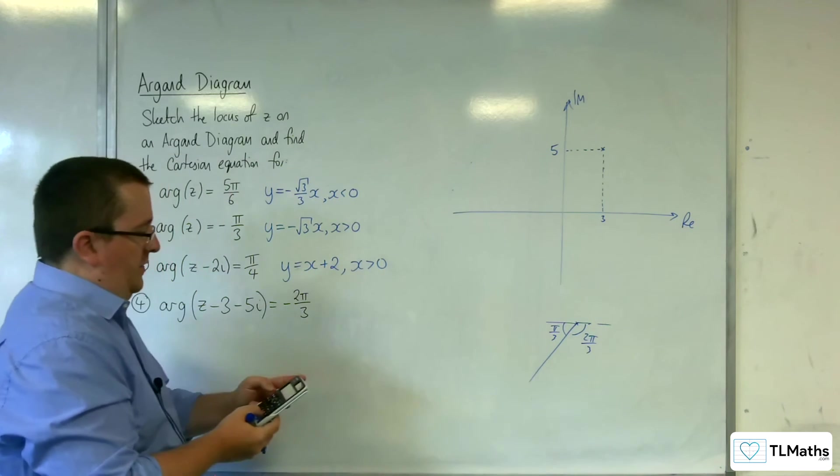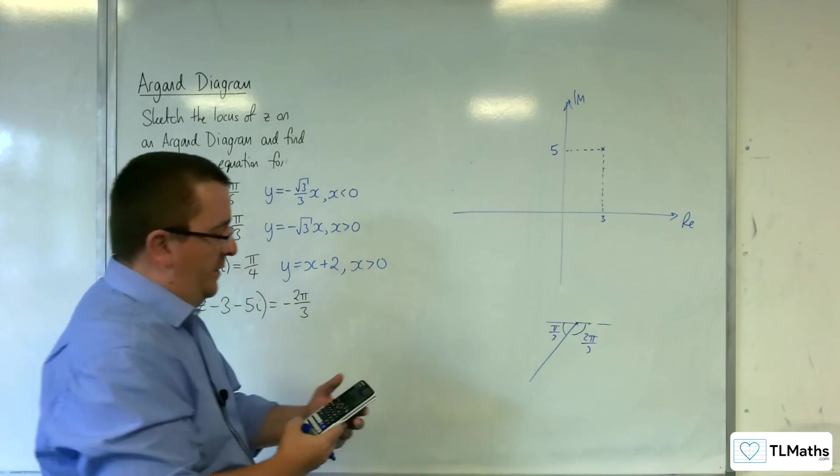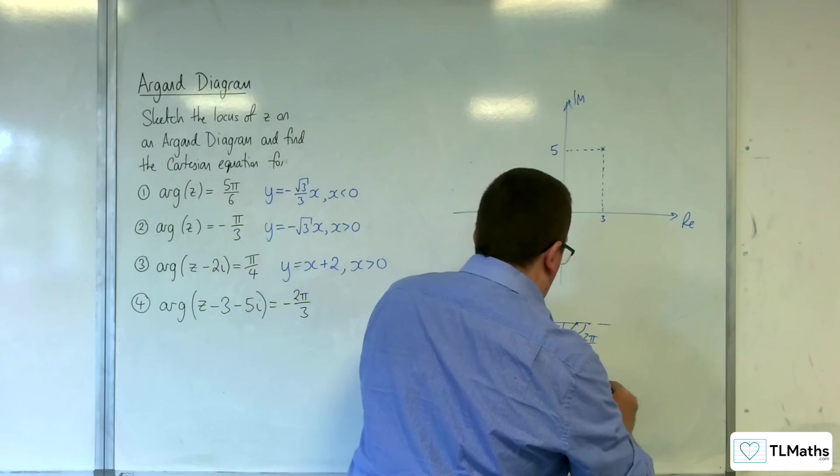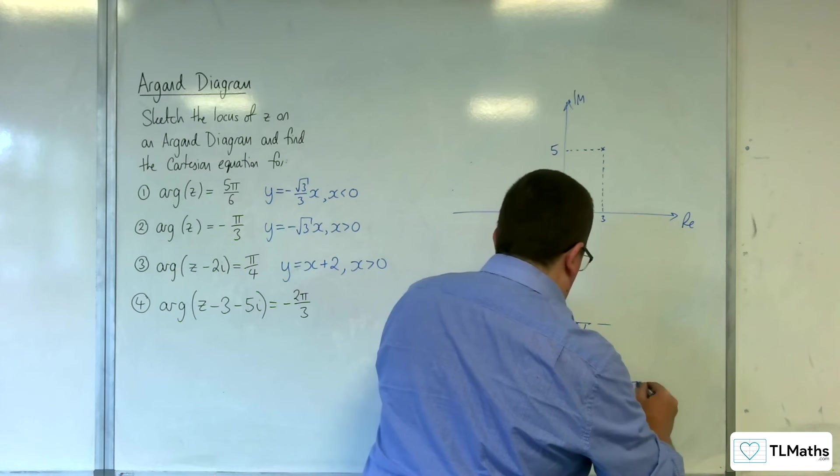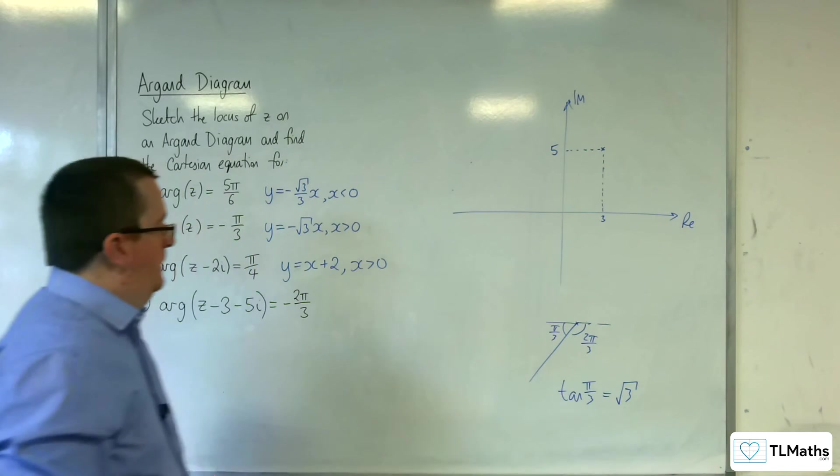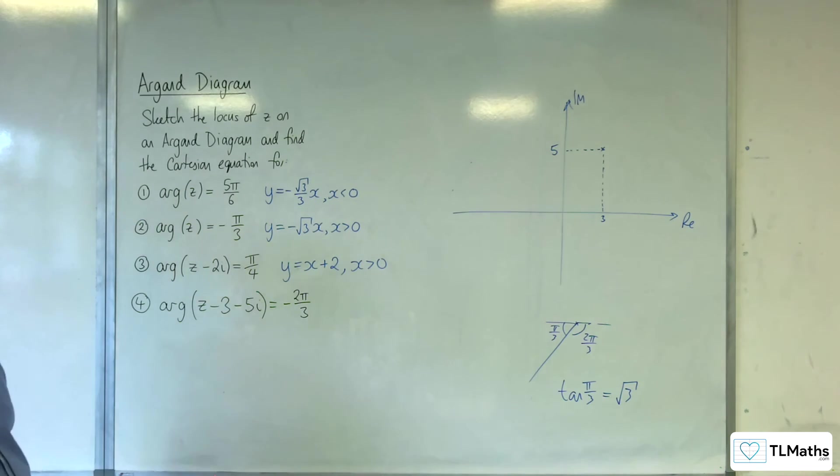So, tan of π over 3, not inverse tan. Tan of π over 3 is equal to √3. So, √3 is going to be the gradient of the line.